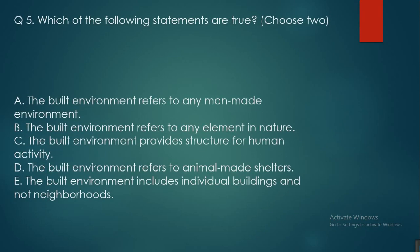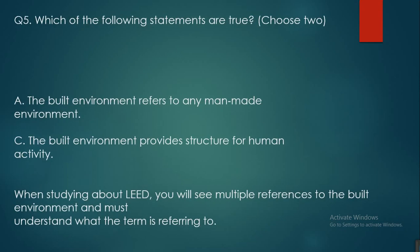Question five: which of the following statements are true? Options: A — the built environment refers to any man-made environment; B — the built environment refers to any element in nature; C — the built environment provides structure for human activity; D — the built environment refers to animal-made shelters; E — the built environment includes individual buildings and not neighborhoods. The answer is A and C. The built environment refers to any man-made environment and provides structure for human activity — terms you will encounter frequently when studying LEED.